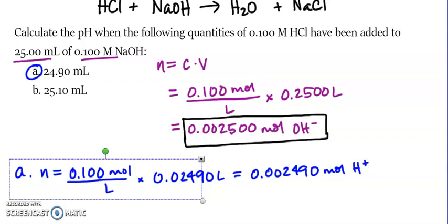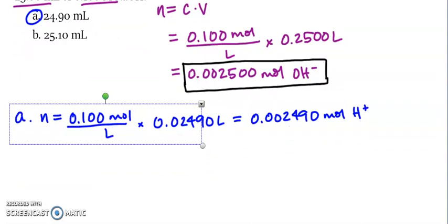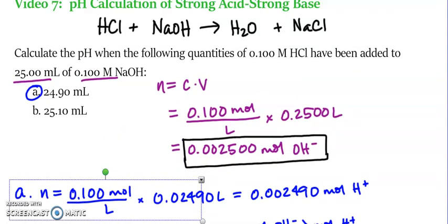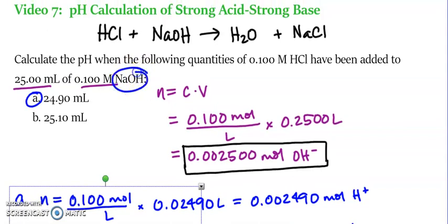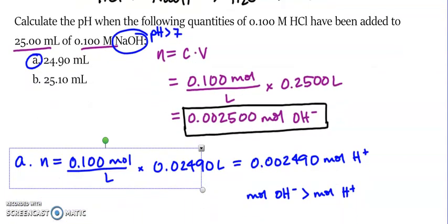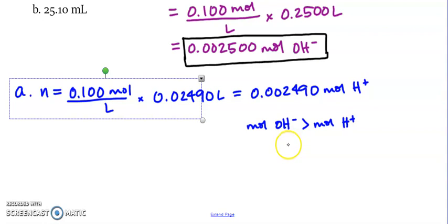Now we're going to compare these two values. We're going to compare our H plus and our OH minus. And I can see that I have more OH minus. So my moles of OH minus are greater than my moles of H plus. I've got 0.00249 moles of H plus, which is less than 0.002500 moles of OH minus. This means that I'm before the equivalence point, because if I'm starting with a base, my pH initially is going to be greater than 7. So if I have more OH still here, my pH is still greater than 7.